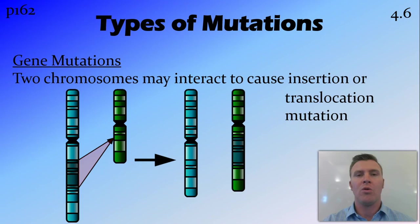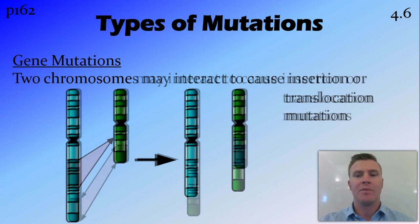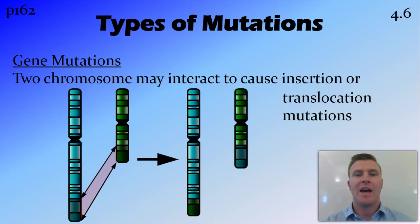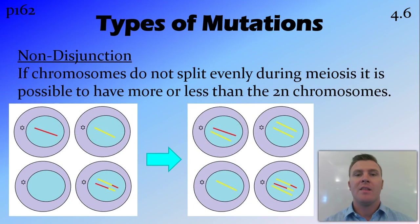There are also mutations that occur when two or more chromosomes interact with each other: an insertion, where a section of DNA from one chromosome is inserted into another, or a translocation, where a section of DNA from one chromosome is swapped with a section from another. Both of these lead to mutations in both chromosomes.